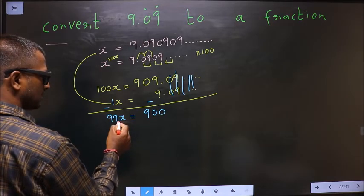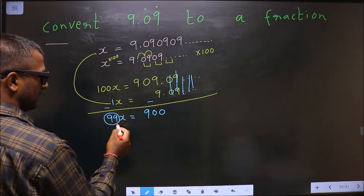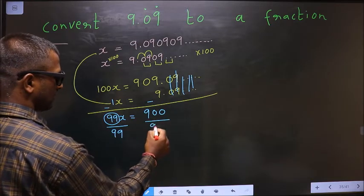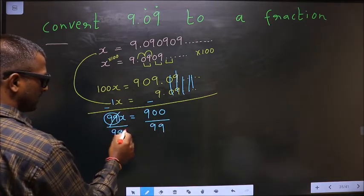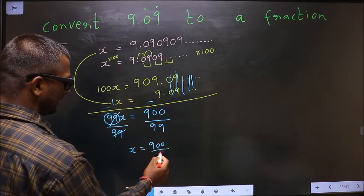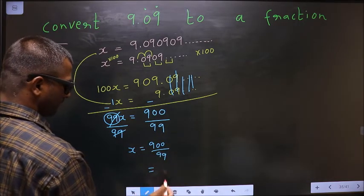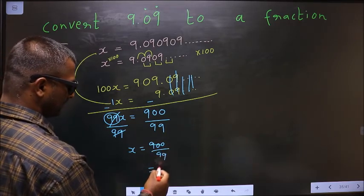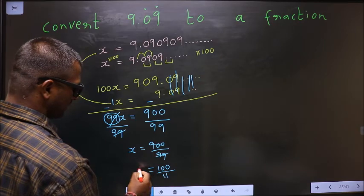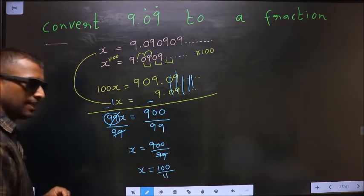Now to get X, I should remove this 99. So to remove 99, divide by 99 on both sides. This cancels out. X equals 900 by 99. If I cancel in 9 table, I get 100 by 11.